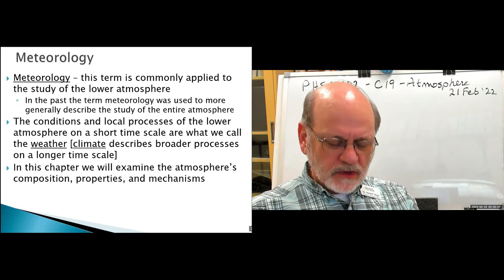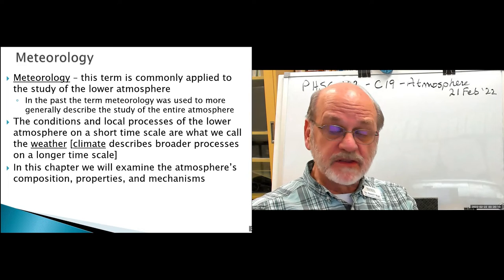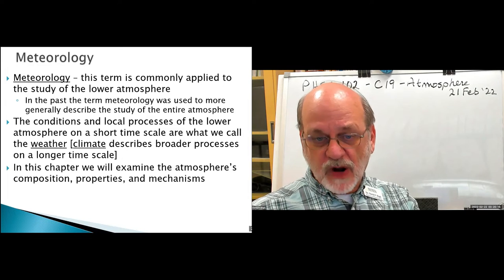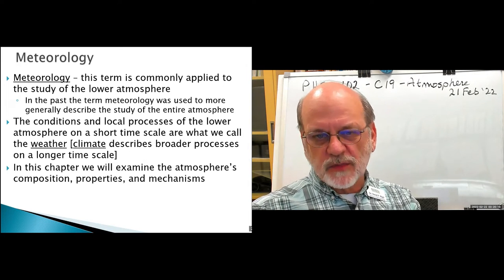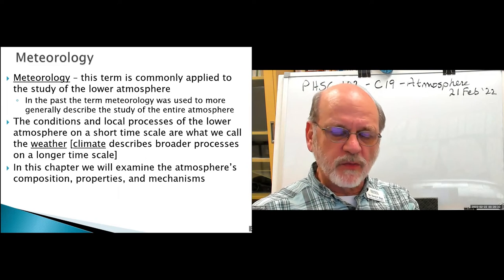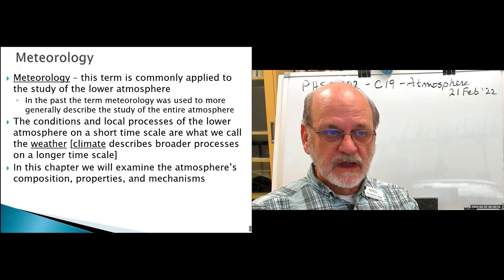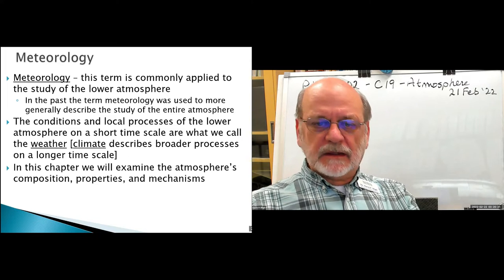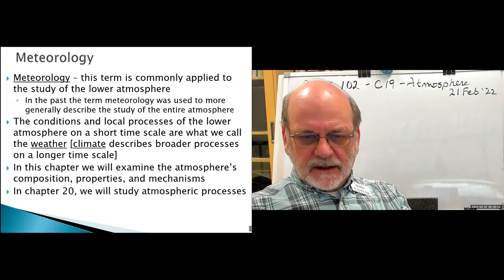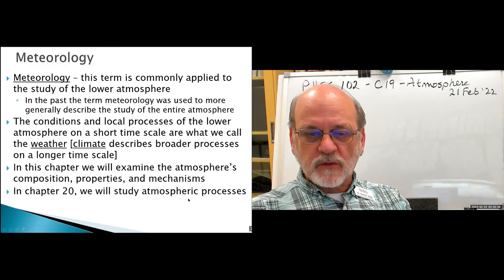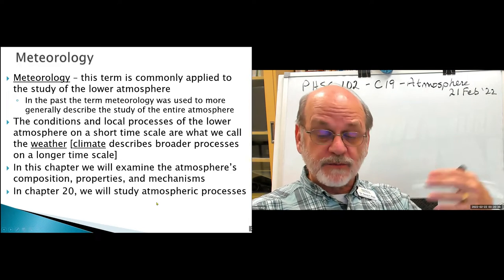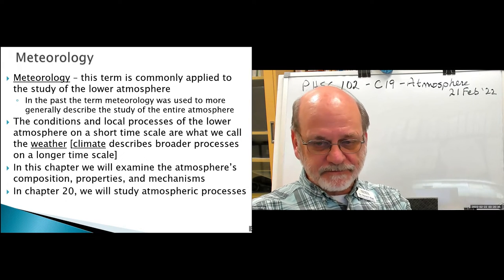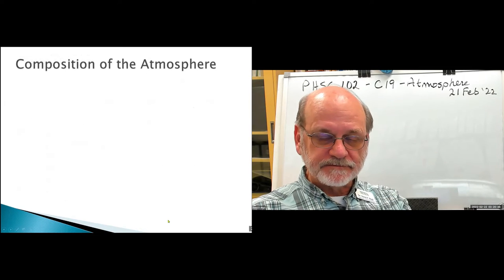In this chapter, we're going to look at what the atmosphere is made of, its components, its primary physical properties, some chemical properties, and some of the mechanisms operative in the atmosphere. When we get to Chapter 20, we'll expand upon those mechanisms and discuss atmospheric processes in greater detail.